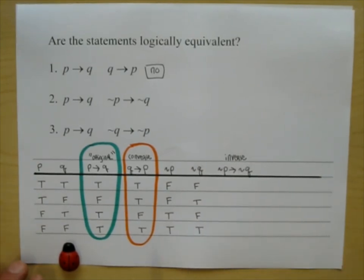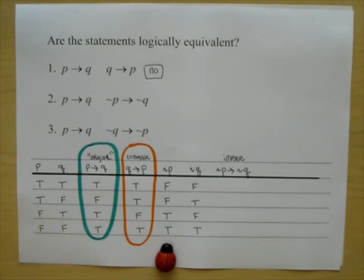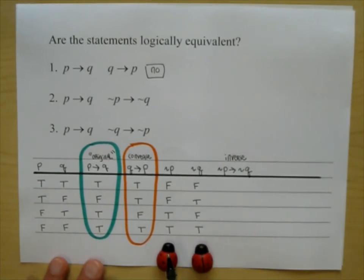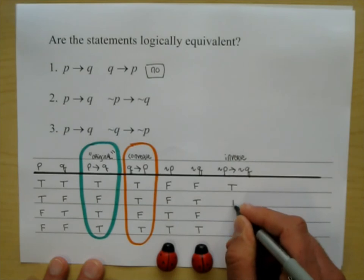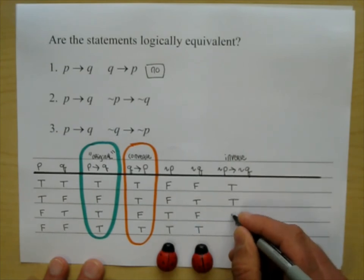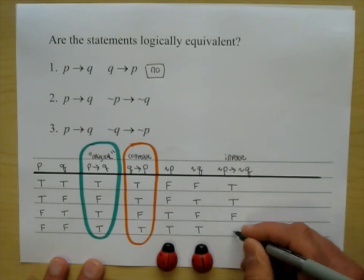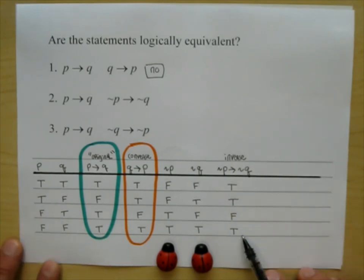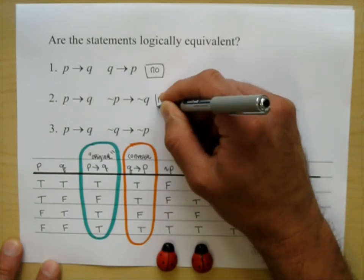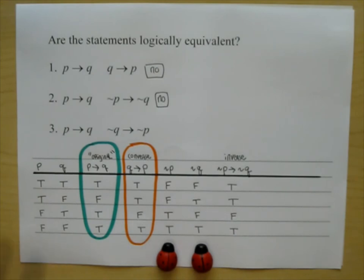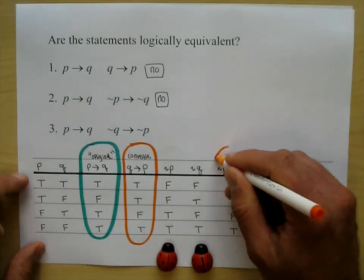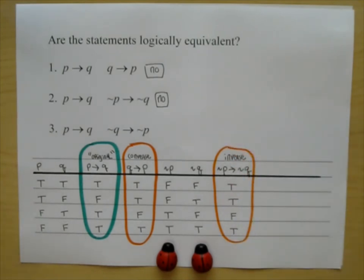Now let's compute the inverse: if not-P then not-Q. If false then false is true. If false then true is true. If true then false is false. If true then true is true. Is this column identical to the green column? No. Interestingly, the inverse column is identical to the converse — so the inverse and converse are logically equivalent to each other.